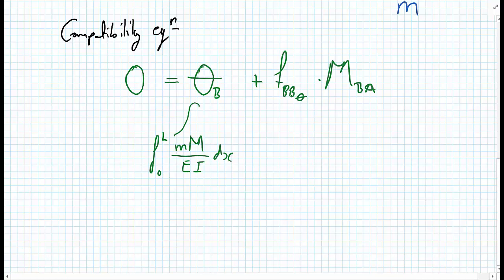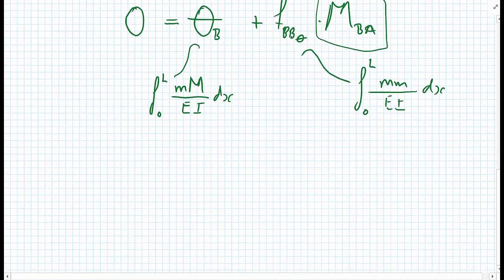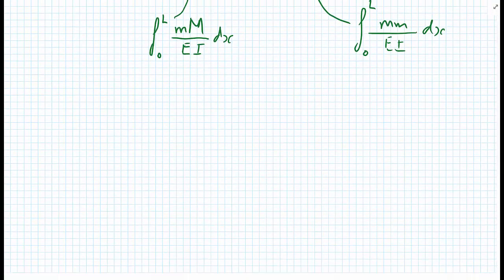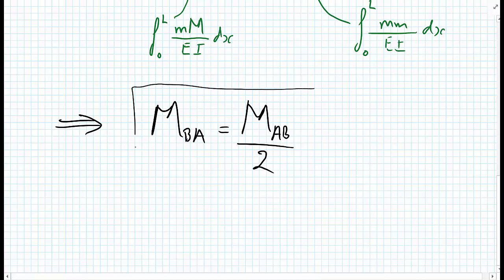The flexibility coefficient, again from the unit load method, is the integral from 0 to L of little m multiplied by little m, over EI, dx. From this we can calculate our MBA. Without going through all steps of the derivation, this gives us MBA equals MAB divided by 2. This is a reasonably fundamental result.